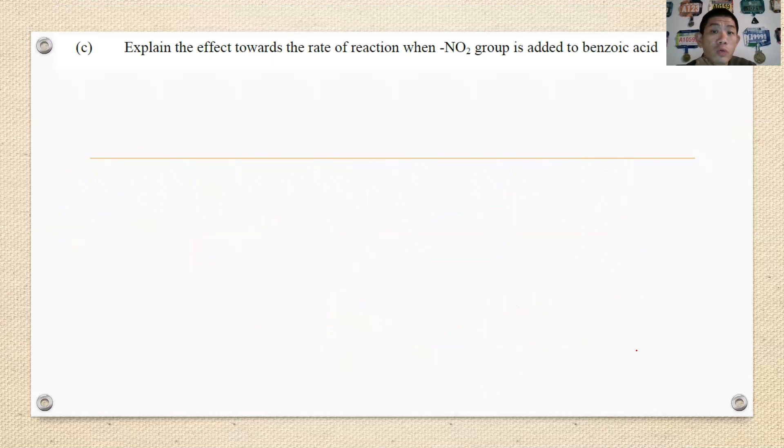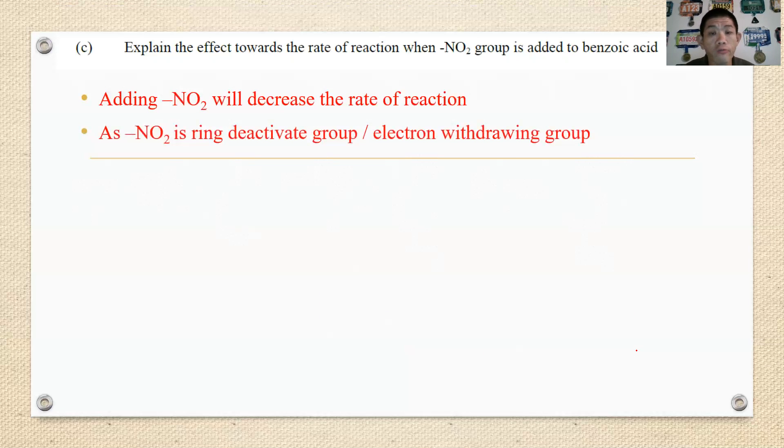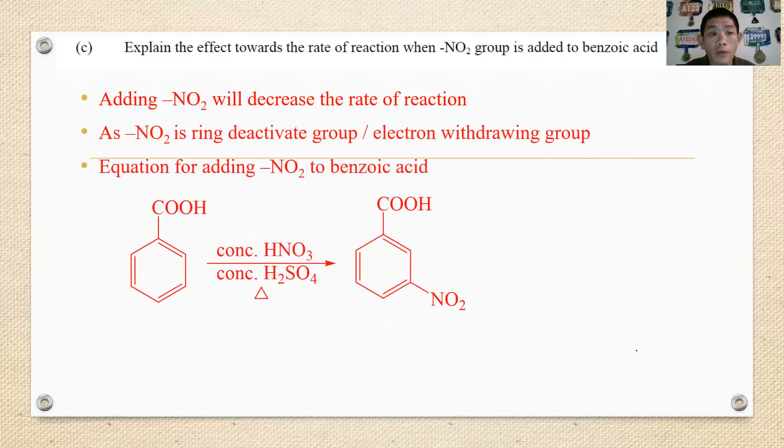Then number C, explain the effects towards the rate of reaction when nitro group is added to benzoic acid. Adding NO2 will decrease the rate of reactions. NO2 is a ring deactivating group or we say electron withdrawing group, therefore adding the electrophile to NO2 will form at the meta positions. Usually this will be the three marks that we will need to write because you also need to know what is the possible product that is formed from the reaction because this is a ring deactivating group. That is all for question number three.